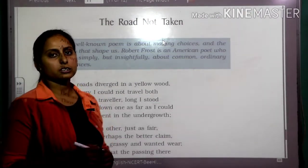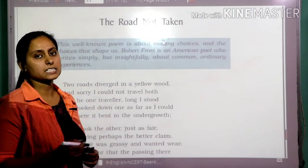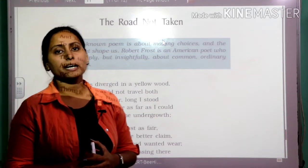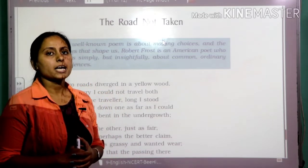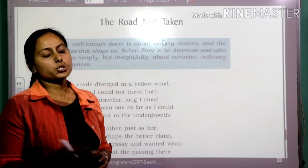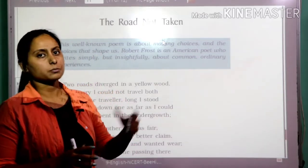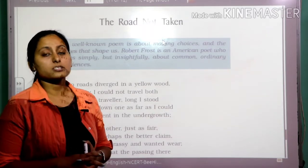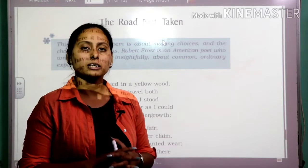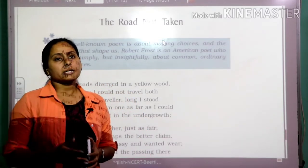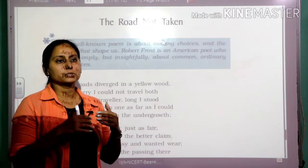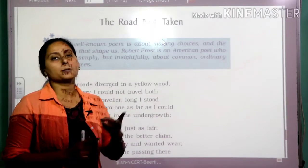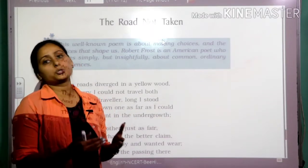Hello all, today we are going to start the first poetry of Class 9th NCERT Beehive book — 'The Road Not Taken.' This poem is written by Robert Frost, who was an American poet. His poetries were earlier published in England but later in America as well. Today we are going to discuss the meaning of the poetry — what Robert Frost is trying to tell us. He is trying to tell us about the different choices and decisions which we have to take in our daily lives, where we have to decide between two given options and sometimes take a tough choice as well.